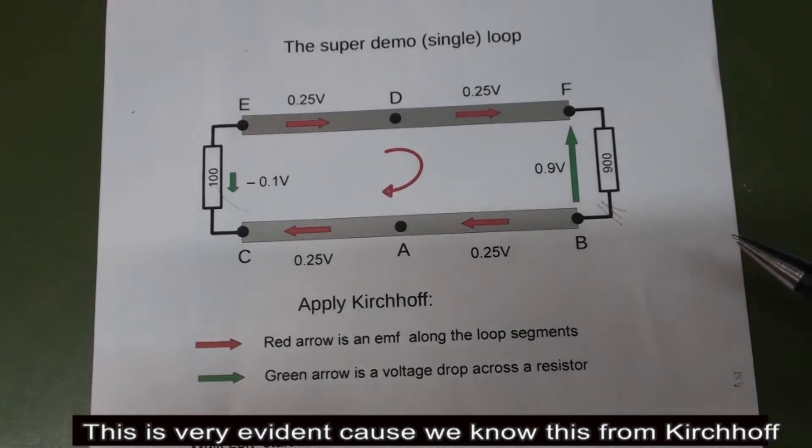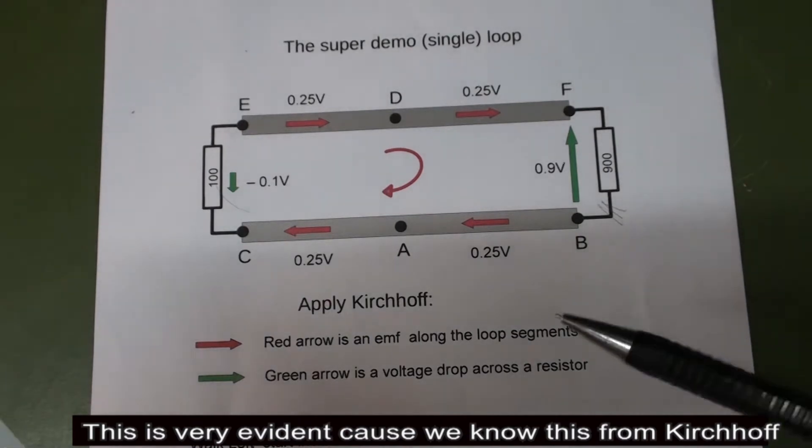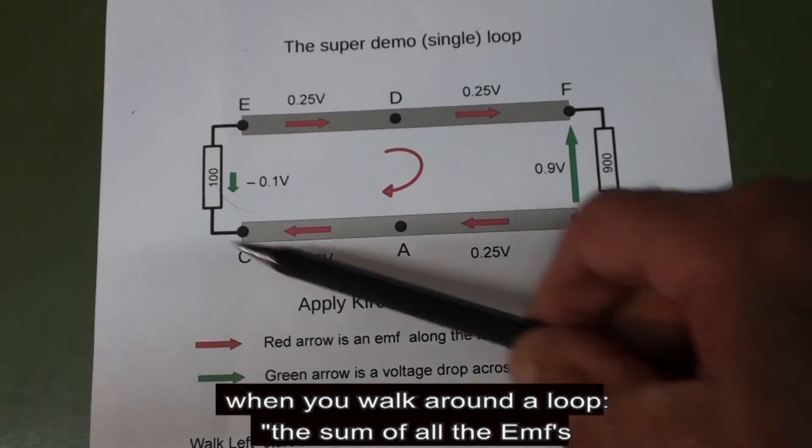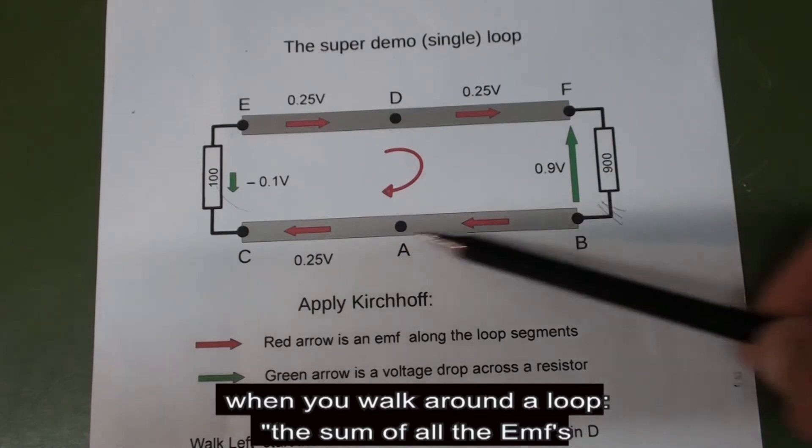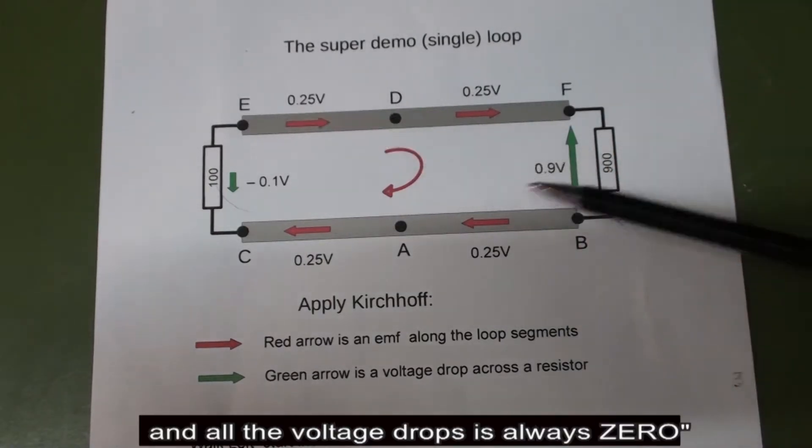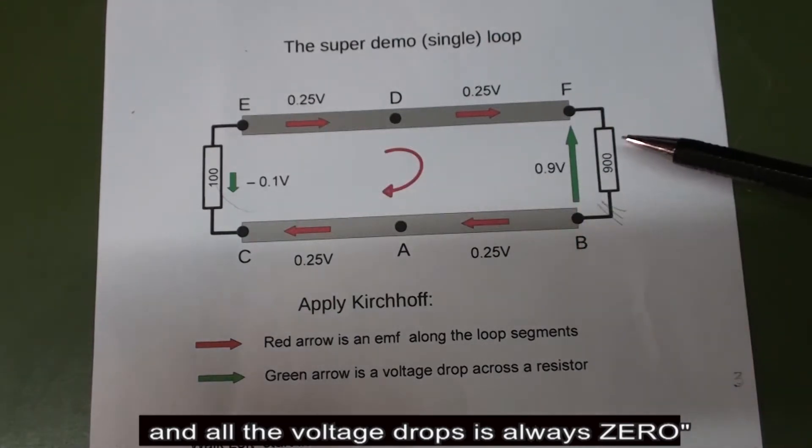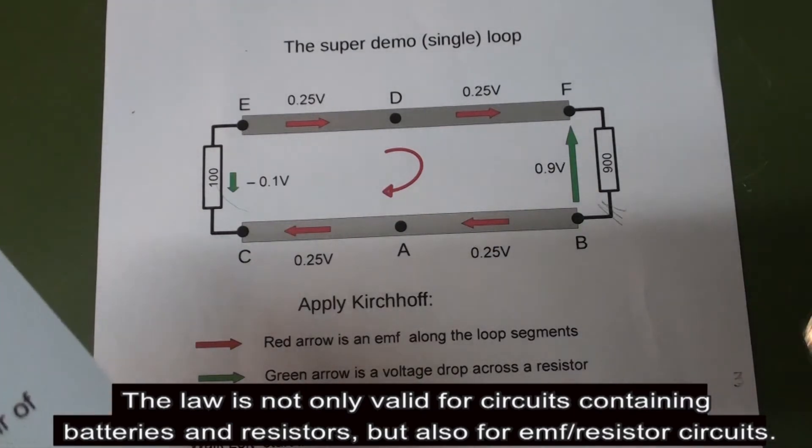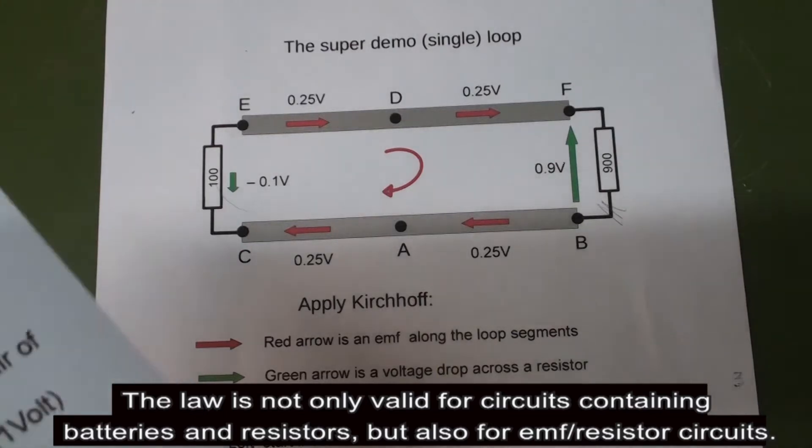This is very evident because we know this from Kirchhoff, so please do not blame him. When you walk around a loop, the sum of all the EMFs and all the voltage drops is always zero. And this law is not only valid for circuits containing batteries and resistors, but also for EMF and resistor circuits.